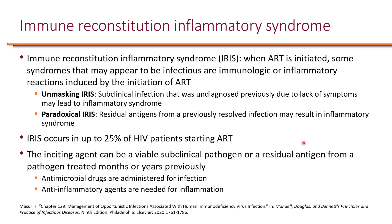There are two types of IRIS. Unmasking IRIS is when someone already had an infection but had no symptoms due to lack of immune response; once ART starts, those symptoms become unmasked — you've discovered an infection that was already present but unknown.